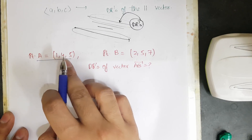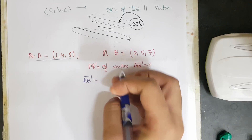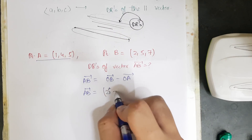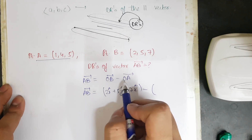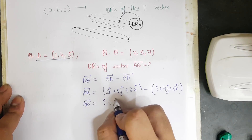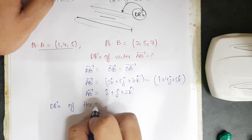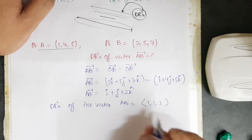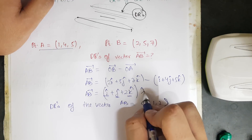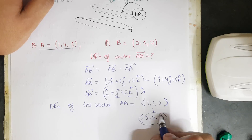To calculate DRs when two points are given: for vector AB with point A=(1,4,5) and point B=(2,5,7), AB = OB − OA = (2î+5ĵ+7k̂) − (1î+4ĵ+5k̂). So the DRs of vector AB are 1, 1, and 2. If you multiply AB by any lambda, the basic ratio remains the same: 2,2,4 still gives ratio 1:1:2.